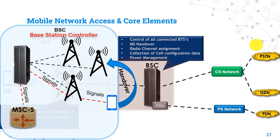BSC assigns radio channels for users when making a call or registering to the network. It collects cell data like LAI (Location Area Identity) and power of the BTS, and decides whether to increase or decrease BTS power according to the distance between the BTS and the user equipment. It is also responsible for the frequency hopping process, where if a user call is handled on a bad frequency channel, the BSC decides to move the call to another frequency channel.